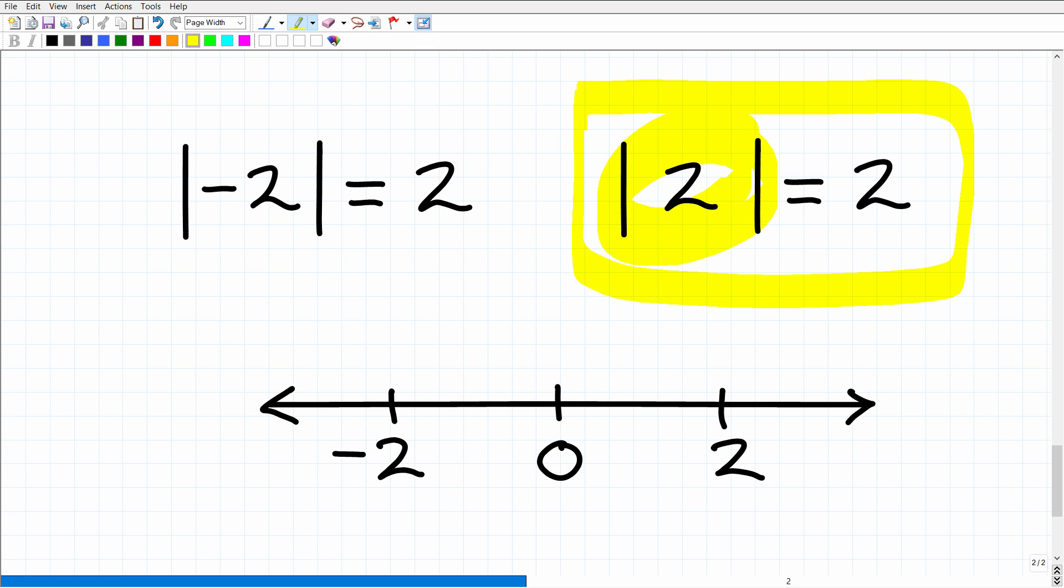So when I look at absolute value, you really think about being asked a question: how far is two from zero on a number line? That's what absolute value is. Of course, the absolute value of two is two. So it's saying the distance from two from zero on a number line is two. So we can kind of see that visually here.